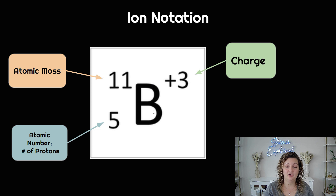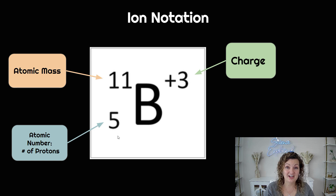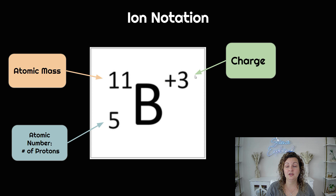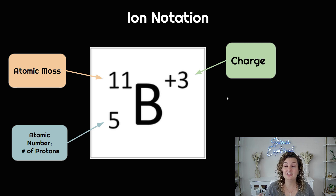So we need to be able to write and understand ion notation. The center is going to be our element symbol — in this case capital B for boron. The bottom left-hand number is going to be your atomic number, or how many protons you have, so boron has five protons, and that's not going to change. The top number is going to be your atomic mass, and remember the atomic mass is protons plus neutrons. Then in our top right-hand corner is going to be the charge. The charge for this boron is positive three, which means it's a cation — it had to give away or lose three electrons to be positively three charged.